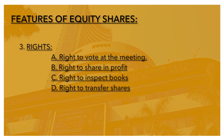Equity shareholders company के owners हैं, इसलिए उन्हें कुछ अधिकार मिलते हैं। A: Vote देने का अधिकार — General meeting में equity shareholders vote दे सकते हैं। B: Dividend का अधिकार — जब company को profit होती है, तो equity shareholders को dividend मिलता है। C: Books inspect करने का अधिकार — equity shareholders company के statutory books को inspect कर सकते हैं। D: Share transfer करने का अधिकार — Articles of association में दिये गए नियमों के अनुसार equity shareholders अपने shares transfer कर सकते हैं।